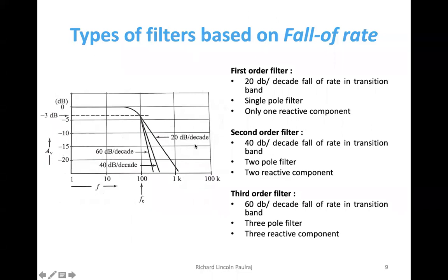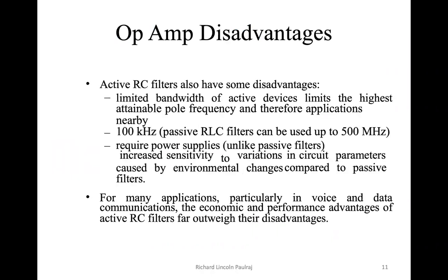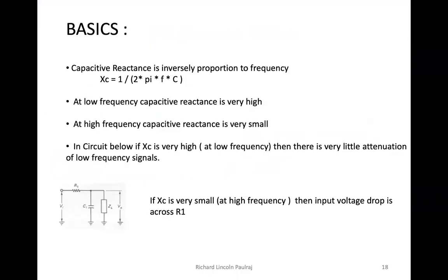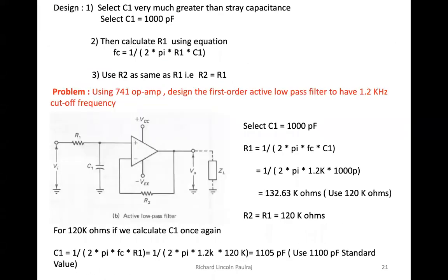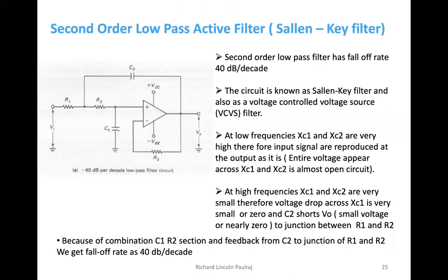For first order filters it's 20 dB, 40 dB, and then 60 dB, and so on. From your point of view, we'll be looking into second order filters, and not third order — just for your reference. These are the advantages, categories, and basics of the filters, what constitutes them, and we solved quite a few problems based on these filters.